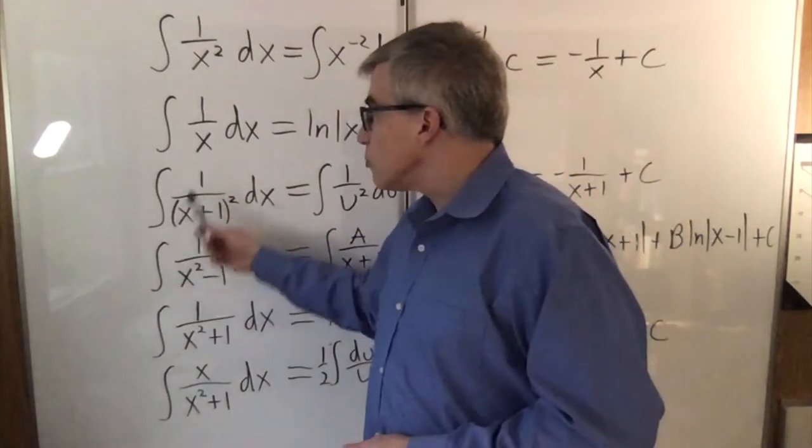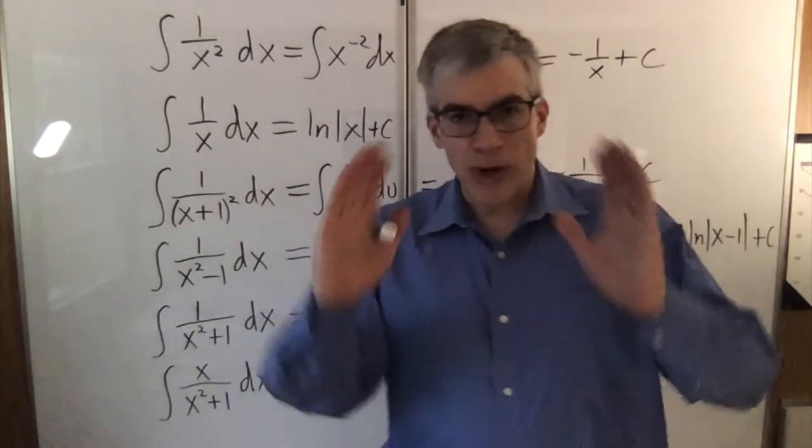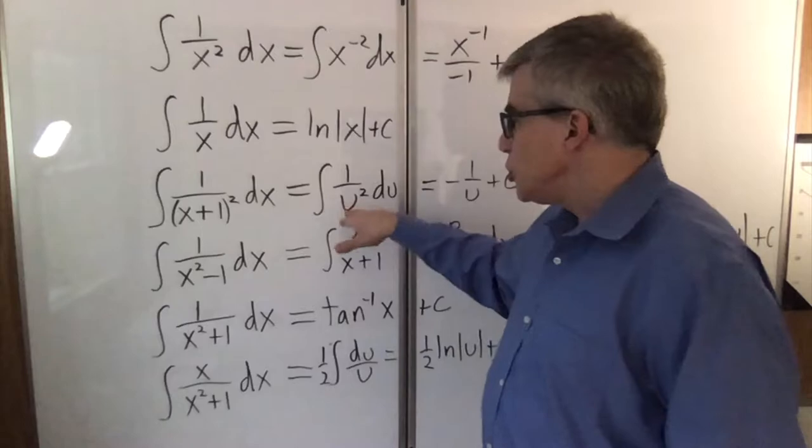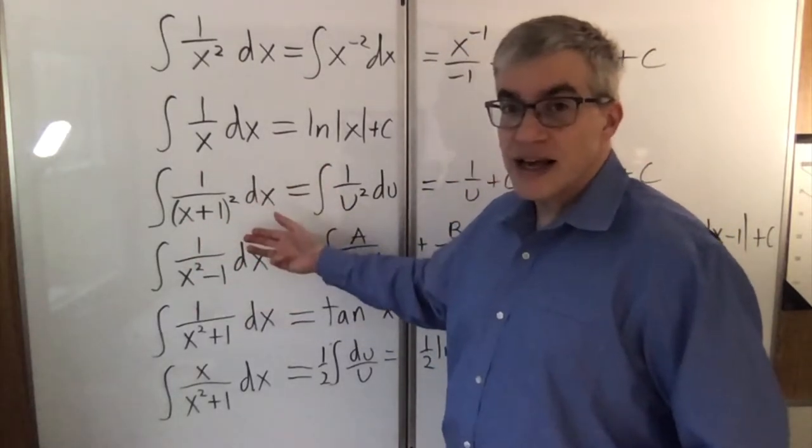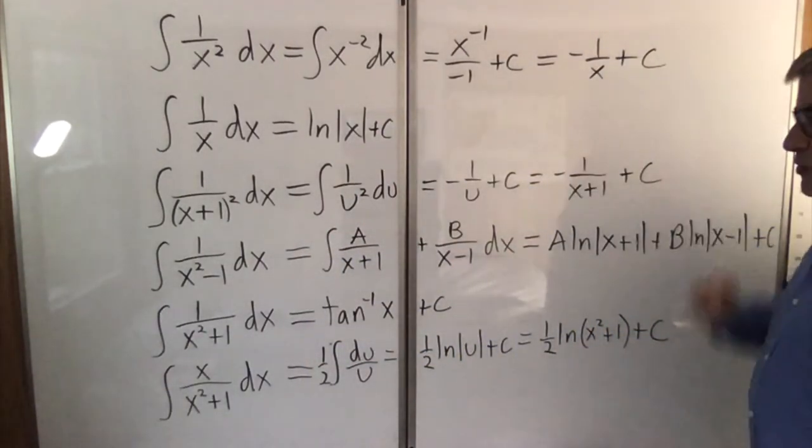This next one here, what if it's x plus 1 quantity squared? Well the x plus 1 in parentheses kind of jumps out as, oh I could substitute that as u. u is x plus 1, du would be the same thing as dx. So 1 over u squared, we're back to the first case, substitute back and we've got it.